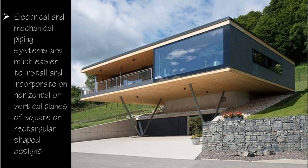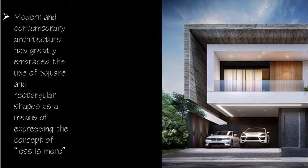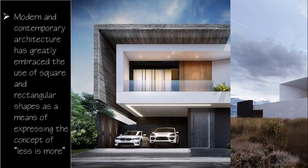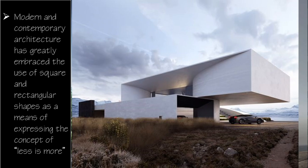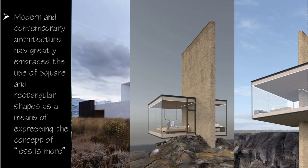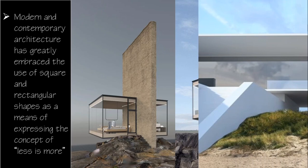Because of the vertical and horizontal frames, these systems can easily be aligned. When it comes to modern and contemporary architecture, the square and rectangular shapes have greatly contributed to and influenced these design styles. The concept of minimalism, or 'less is more,' has been greatly expressed through the use of square and rectangular shapes.